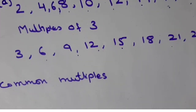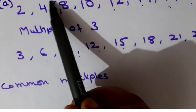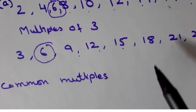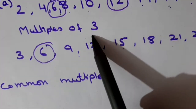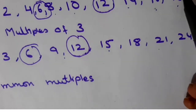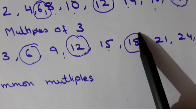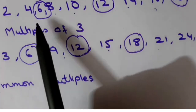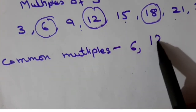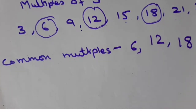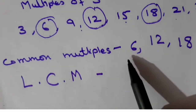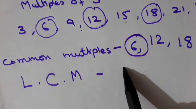Now we will circle the common multiples. See, 6 is common in both — 6 is there in multiples of two and also in multiples of three. Similarly 12 is also common, and 18 is also common. So we have got three common multiples: 6, 12 and 18. Now LCM means lowest common multiple, so the lowest amongst these three is 6. So LCM is 6.